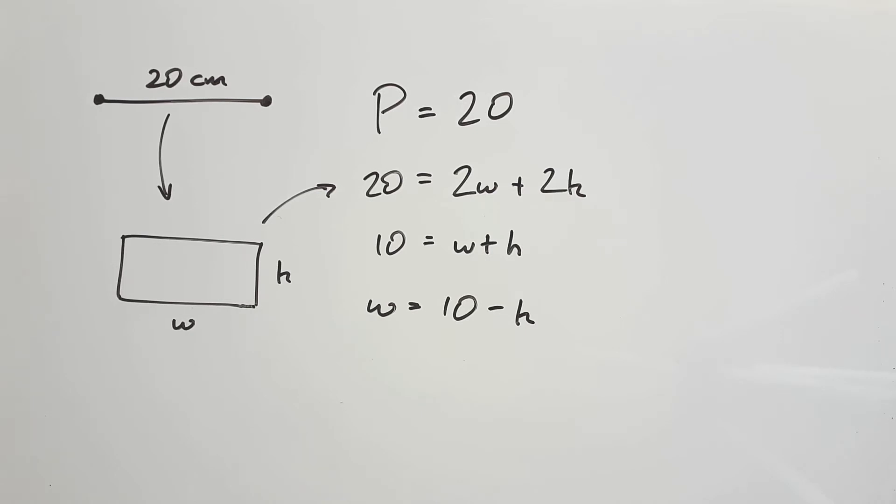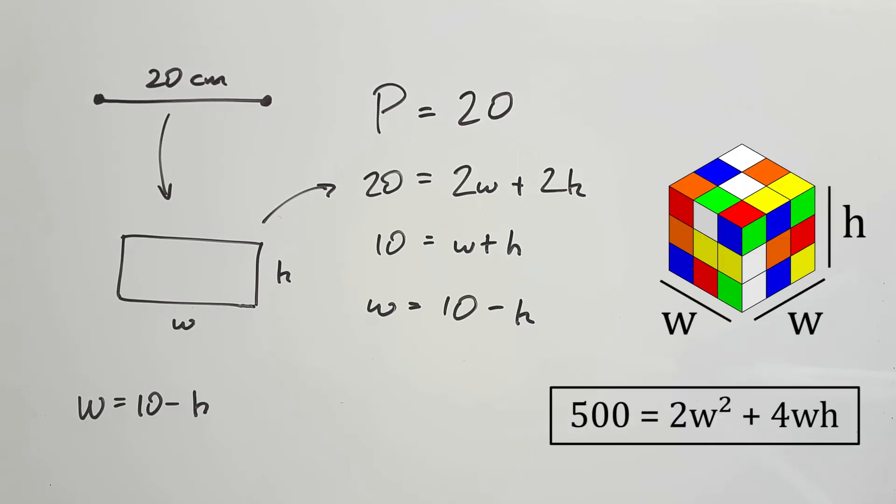It's important to note that perimeter is not the main character of this story. Area is. So this equation we just found is what I call the support relationship. It's meant to help support the main equation, which is the area equation. The support relationship is almost always found from the question, either by a given value, like the perimeter of a rectangle, or the total surface area of a cube.